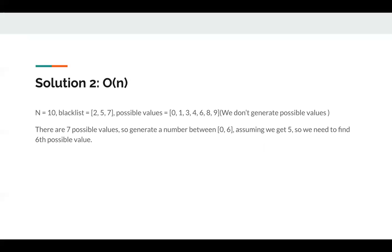Solution two is a deterministic algorithm, but it's a bit slow — O(n). Assuming there are seven possible values, we need to generate a number between 0 to 6 since there are seven possible values. We cannot generate numbers between 0 to 9, otherwise it will be non-deterministic, since when we get 6, 7, 8, or 9 you don't know which value to return.